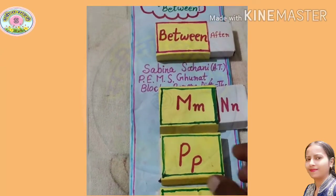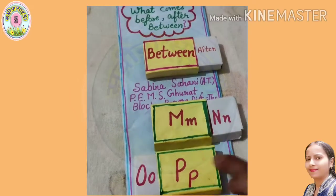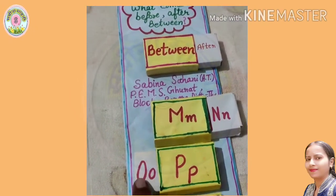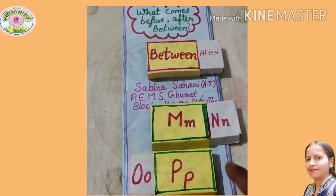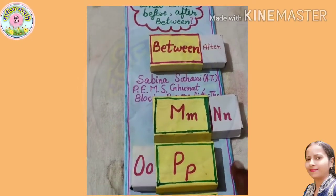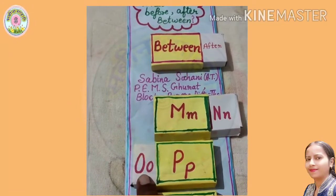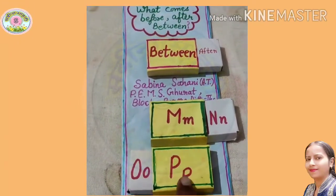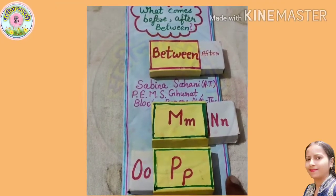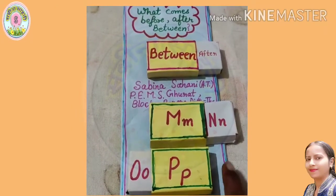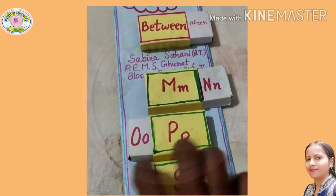In the same way, we can tell children: if it is on this side, it is before; if it is in the middle, it is between; and if it is on the right side, it is after. Left side — before, in the middle — between, and on the right side — after, and so on.